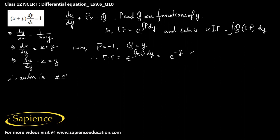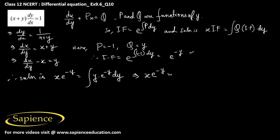Therefore the solution will be x times e to the power minus y equals the integral of Q, that is y times e to the power minus y dy.